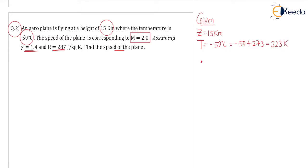Mach number is given as M equals 2.0. Gamma, the ratio of specific heats, is 1.4 for air. R, the characteristic gas constant, is 287 joules per kg kelvin. These are all the given data and the question is to find the speed of the plane.